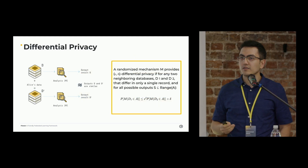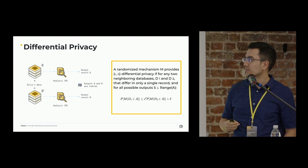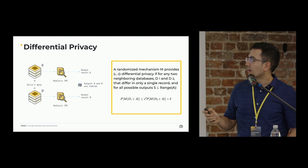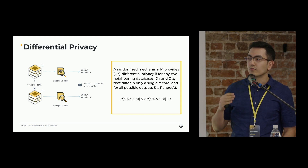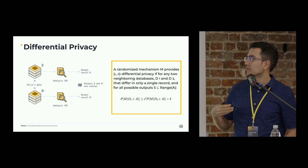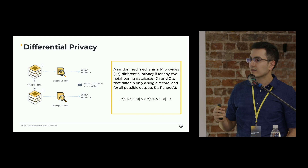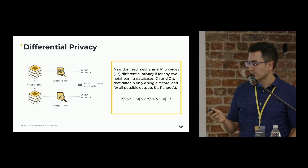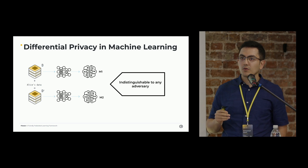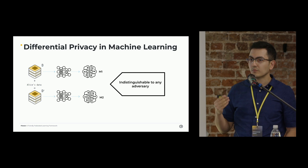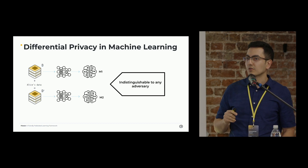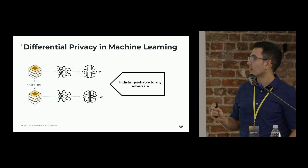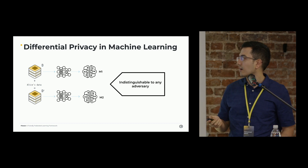Differential privacy is a prominent solution to provide privacy. To put it simply, a mechanism is differentially private when you apply this mechanism on one dataset and get the output, and then you add or remove a data sample from that dataset and apply the same mechanism to get another output — it guarantees that those outputs should be very similar. The same goes for differential privacy in machine learning: if you train a model on a dataset and get model M1, then add or remove one data point and train the model to get model M2, these two models should be indistinguishable to any adversary.